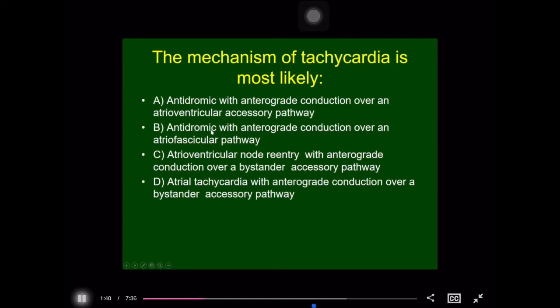B is antidromic tachycardia with anterograde conduction over an atriofascicular pathway. The third choice is atrioventricular node reentry with anterograde conduction over what we call a bystander accessory pathway. And the fourth choice is an atrial tachycardia with anterograde conduction over a bystander accessory pathway.